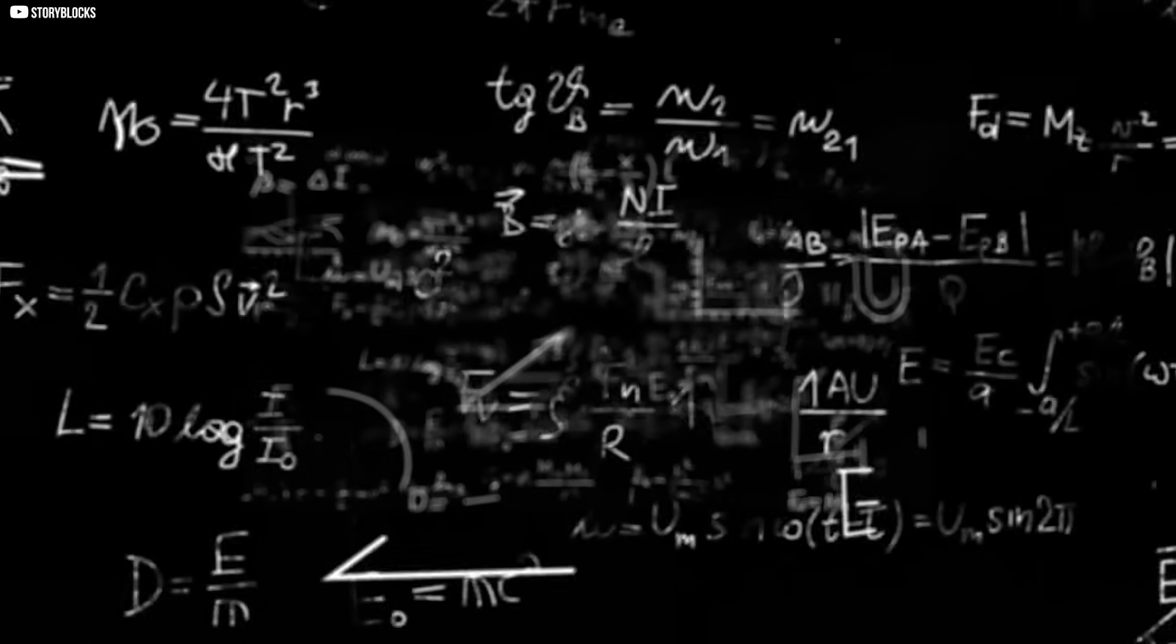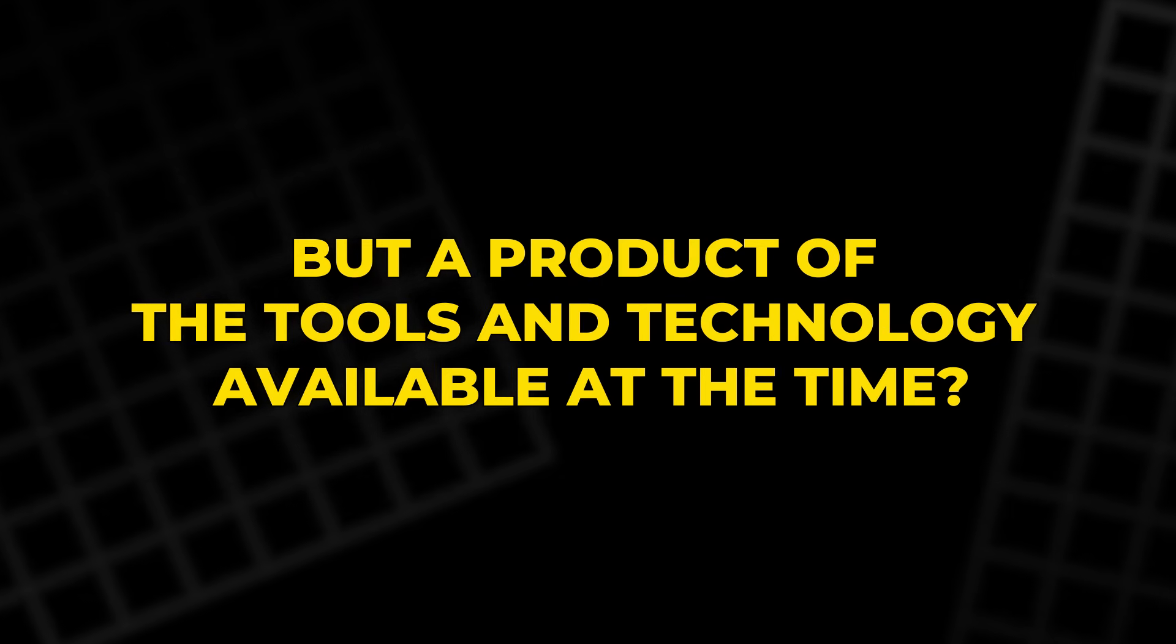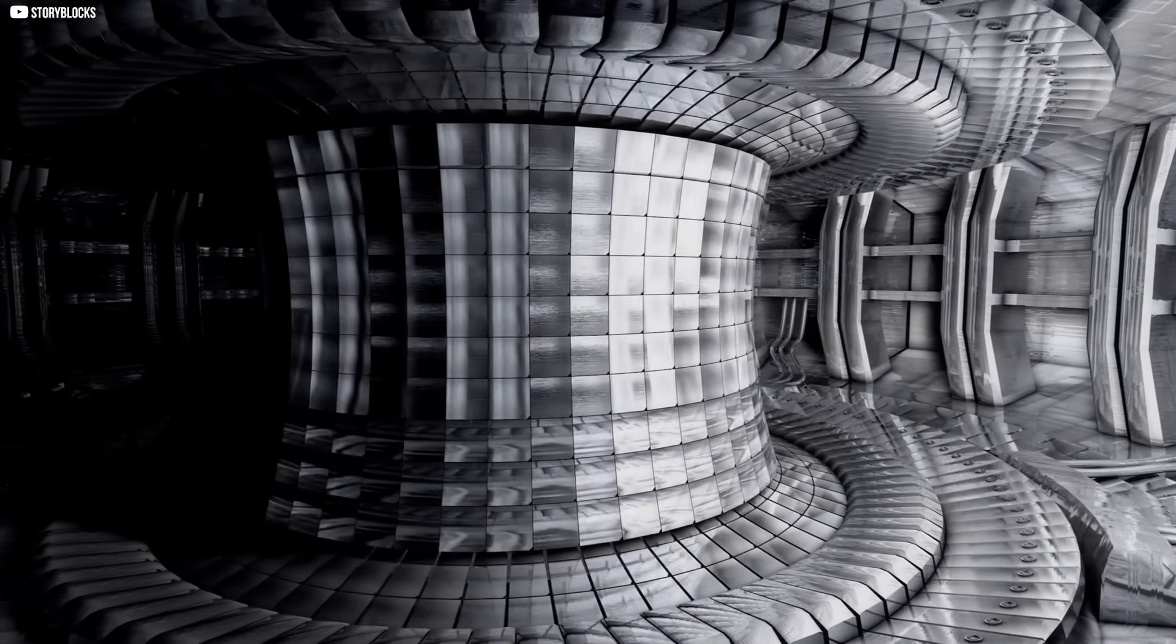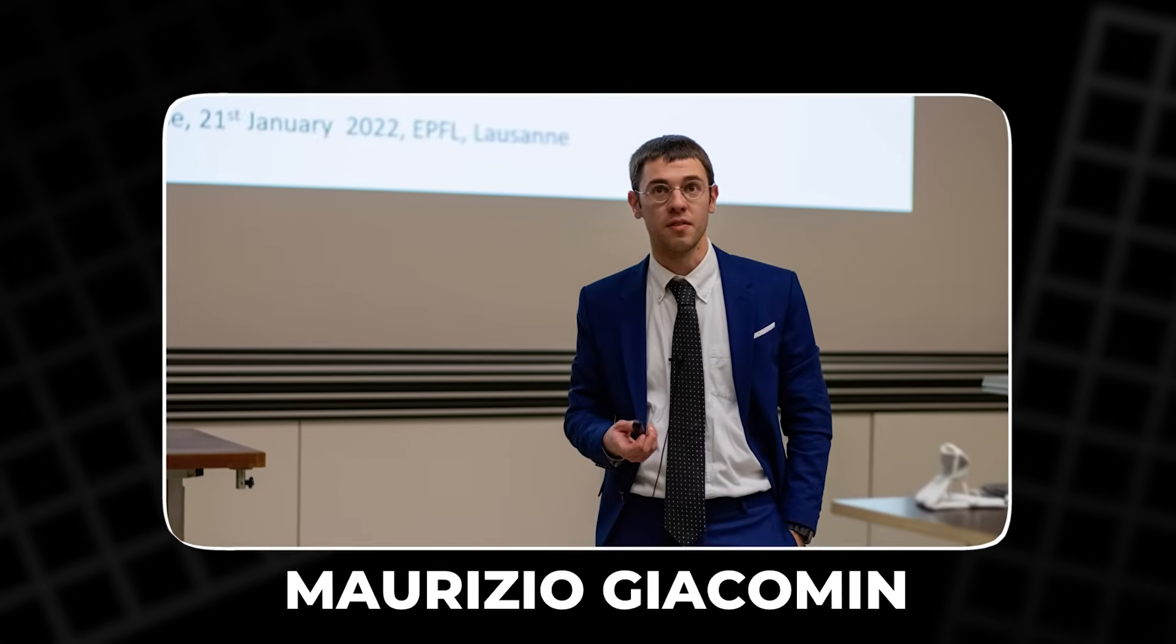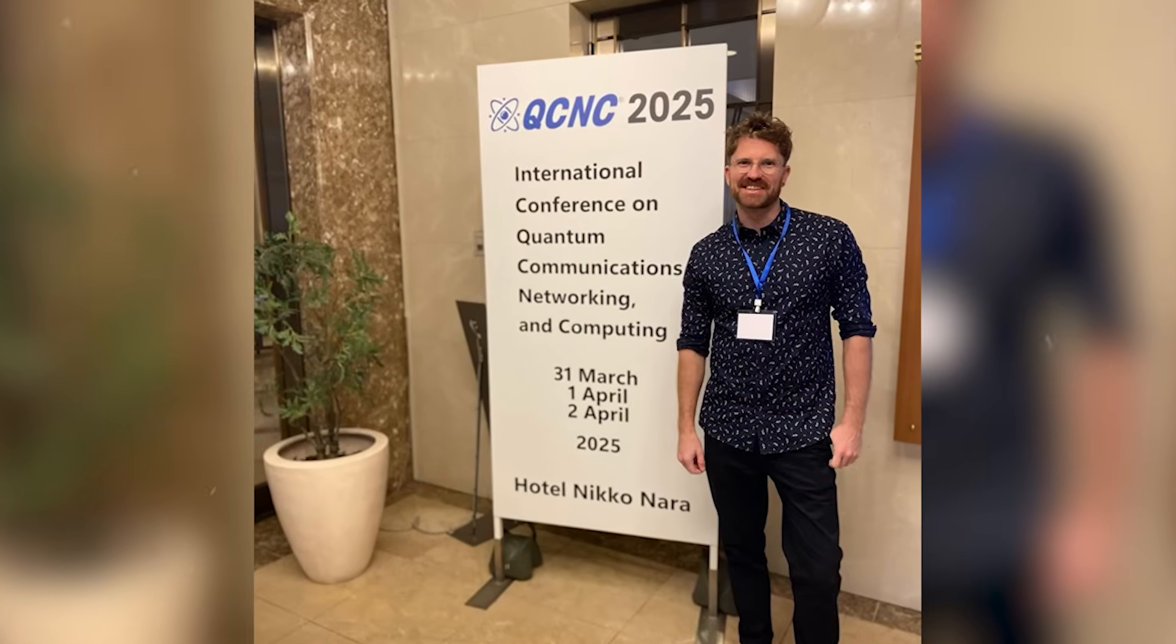What if that limit wasn't physics, but a product of the tools and technology available at the time? Now, a new equation is challenging everything. On May 6th, physicist Maurizio Giacomini and his team published a groundbreaking paper. Their claim? The Greenwald limit wasn't wrong, but incomplete.